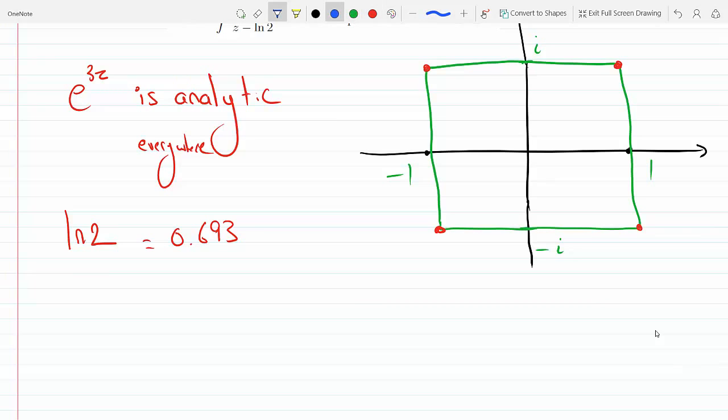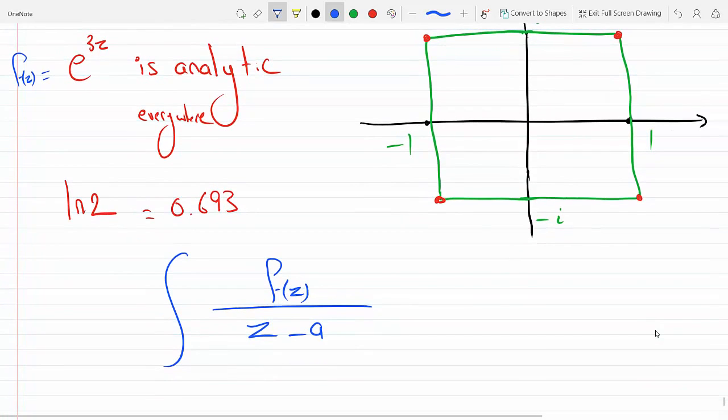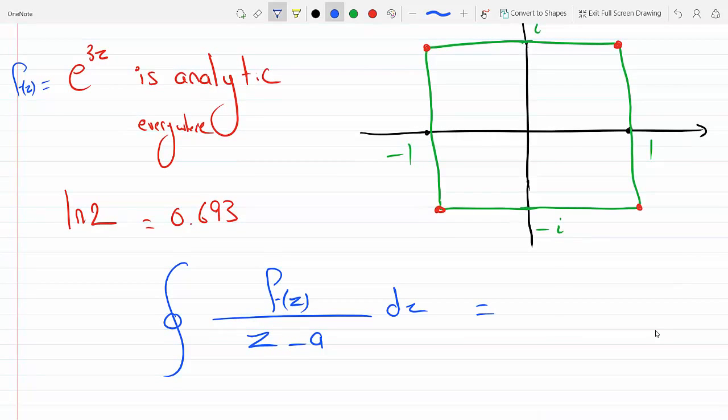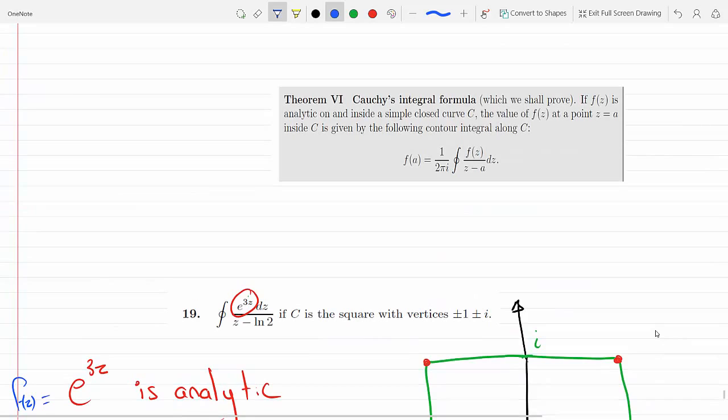If you remember, that theorem says if you have f(z)/(z-a), and here f(z) is e^(3z), and if f(z) is analytic everywhere including point a, then the closed integral of f(z)/(z-a) dz equals f(a). This is the theorem, this is called Cauchy integral formula.